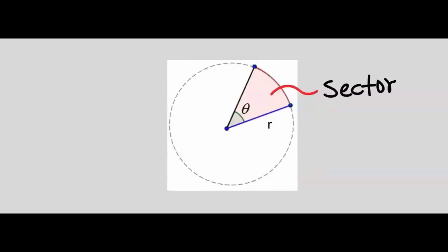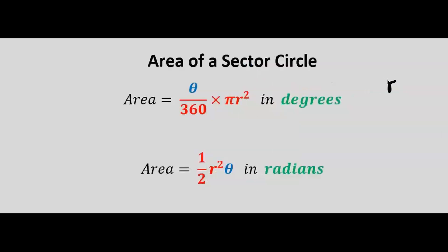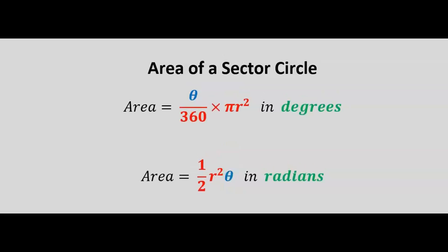However, if the angle at the center is in radians, then we're going to multiply the given radian by 1/2 multiplied by r². The central angle will determine which of the formulas to use unless otherwise stated.